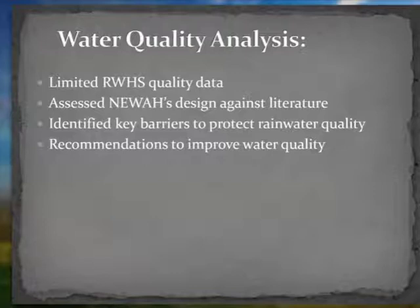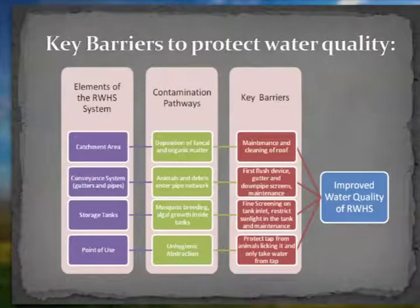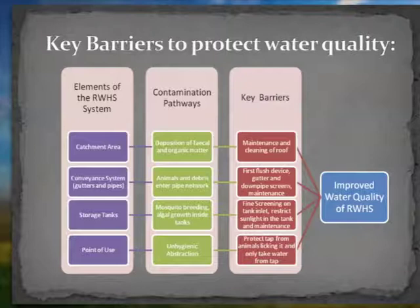This diagram shows the different components of a rainwater harvesting system in the first column, the ways in which the water can be contaminated in the second column, and the key barriers that can be implemented to maintain the higher quality of rainwater. It is evident that maintenance is important, as you can see it is a key barrier for each of the main components of the system.